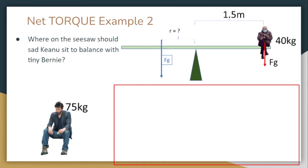Example number two, where on the seesaw could we put sad Keanu Reeves so that he sits to balance out tiny little Bernie? Well, we know where Bernie's at right now. Looking at the seesaw, we can see that Bernie is situated 1.5 meters away from the pivot point and has a mass of 40 kilograms. Keanu has a mass of 75 kilograms, but we don't know where he's sitting. If we want them to balance each other out, that means that we want the seesaw to be at rest, which means that we want our net torque to be equal to zero.